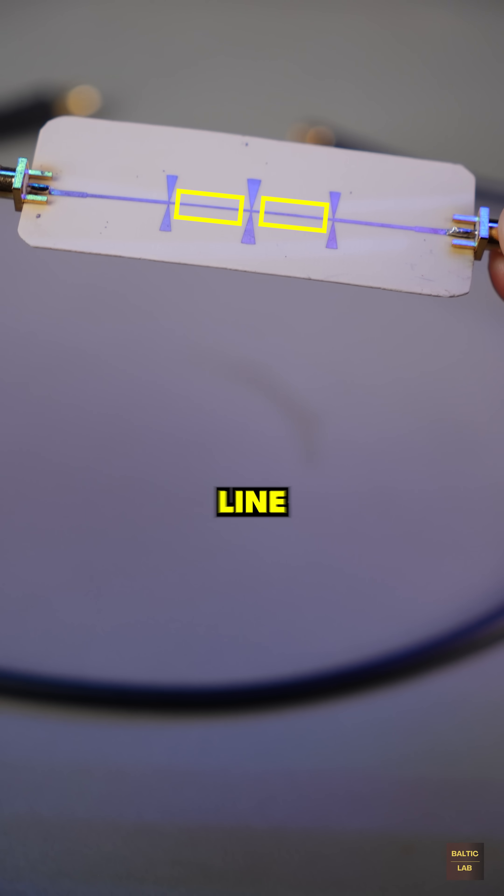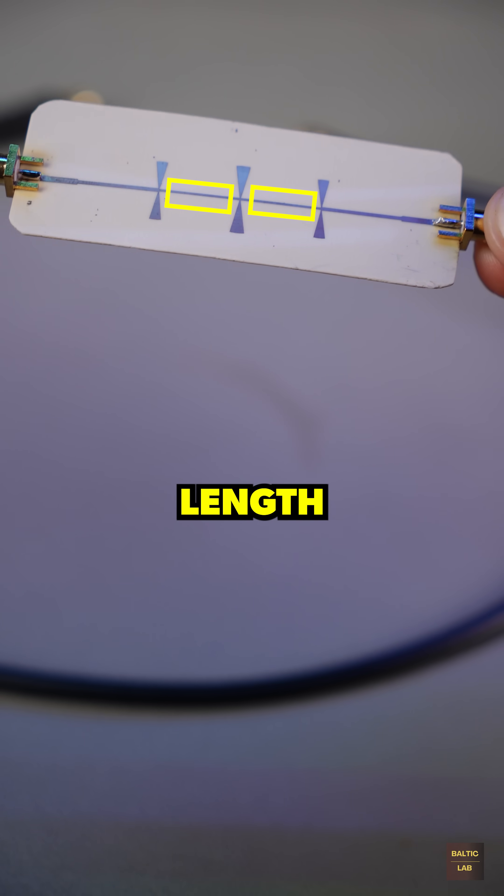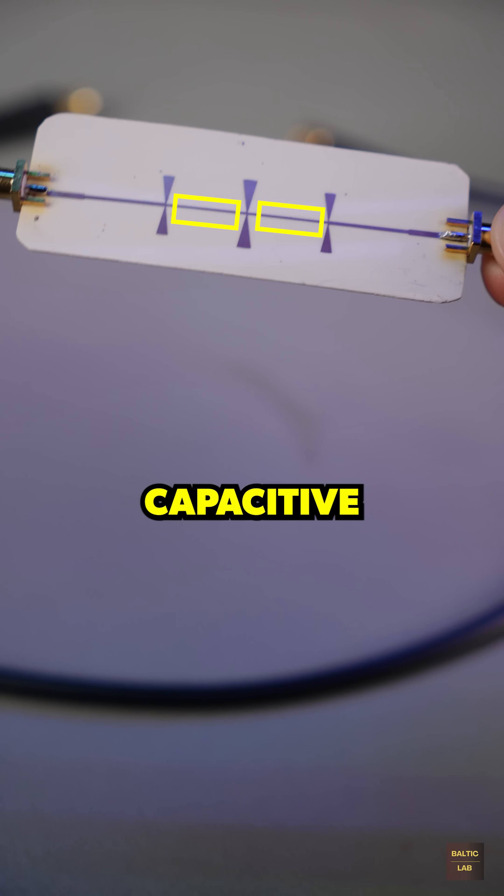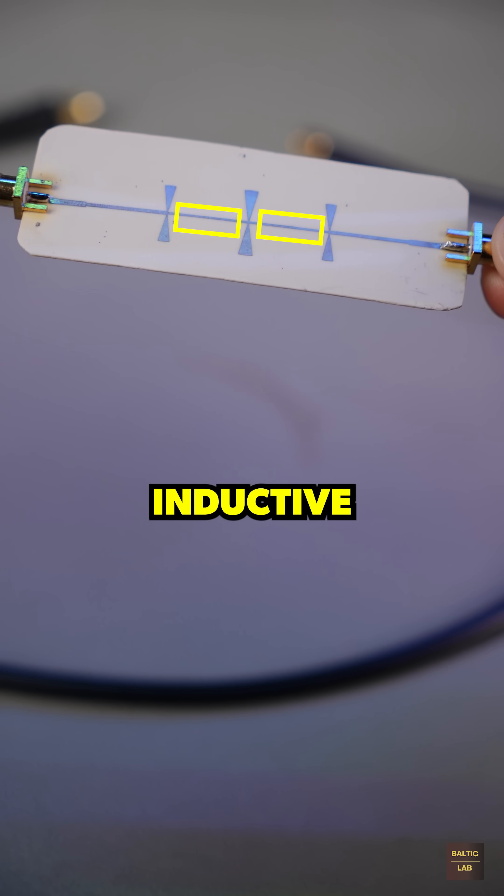This is done by using transmission line sections with defined length and characteristic impedance to transform capacitive behavior into inductive behavior.